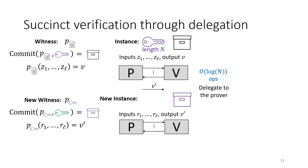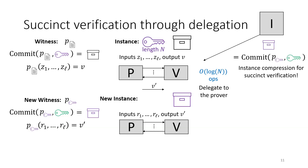We already have an evaluation protocol to check polynomial evaluations, so we can just use it again. We change the witness from the message polynomial to the key polynomial, so the verifier doesn't have to do the huge amount of work of reading the original key. We can have a preprocessing phase which commits to the key under a new key — giving us compression of the instance for succinct verification.